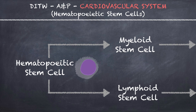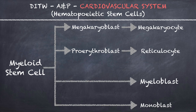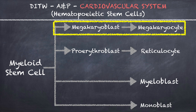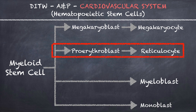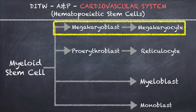Let us start by exploring the myeloid stem cell path. The myeloid stem cell can differentiate down four different paths — either platelet, red blood cell, or certain types of white blood cells. For the platelet path, the myeloid stem cell will change from a megakaryoblast and then into a megakaryocyte.